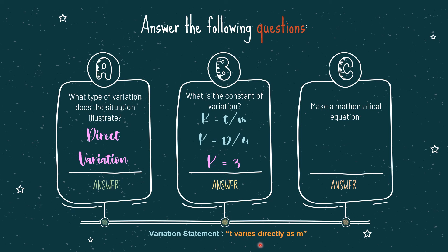For question C: make a mathematical equation. In making a mathematical equation, since this is a direct variation and T varies directly as M, therefore T is equal to K times M. By substituting the value of the constant of variation, we will have T equals 3 times M.